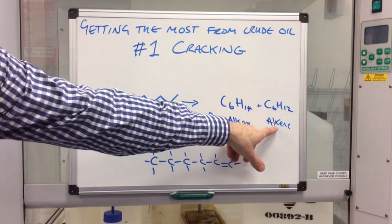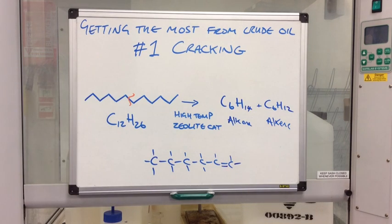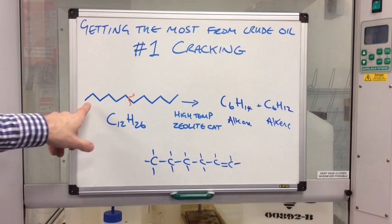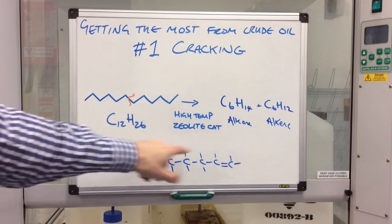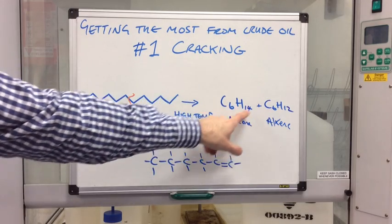The alkene, these are very useful compounds because you can react them with lots of different things and make lots of different substances from them. You could also feed that into the polymer industry and make polymers from that as well. So you've turned a sort of not very useful hydrocarbon into two much higher value substances.